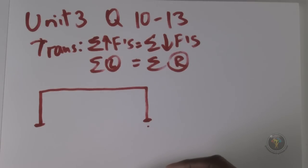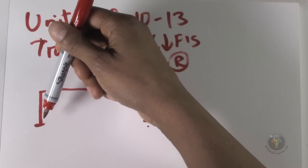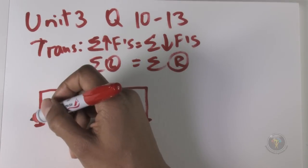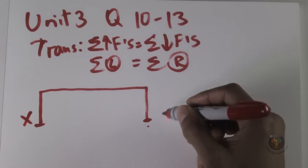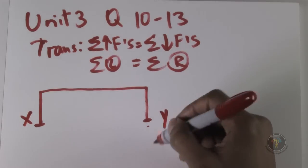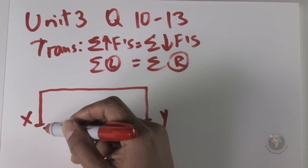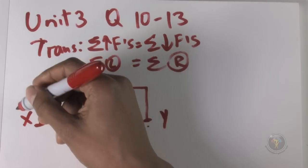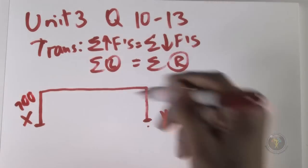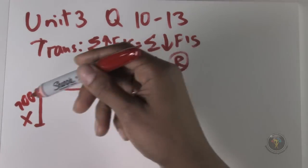We're told that one leg at position x reads 700 newtons and the leg at position y reads 800 newtons. So if you had a scale at each leg, you'd read 700 newtons at x and 800 newtons at y.